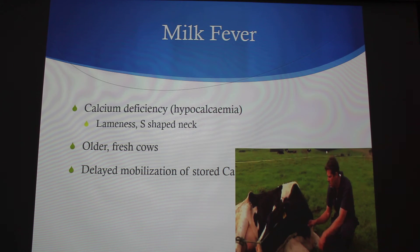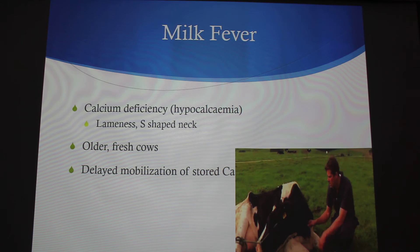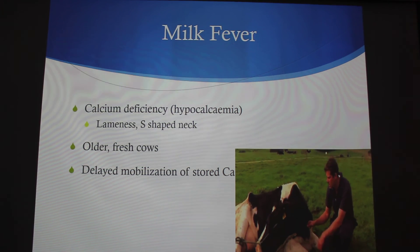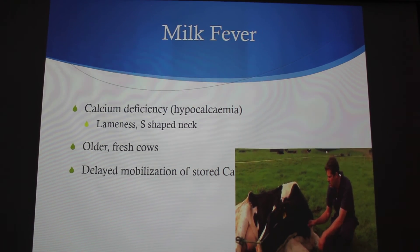Displaced abomasums and retained placenta were covered in readings a couple weeks ago so I won't go into those. The cow's neck looks that way partly because she's tied with a halter, but cows with milk fever tend to curve and look toward their back end. It's definitely hypocalcemia, and treatment is IV calcium administered into the jugular vein, which is where the IV is going in now.